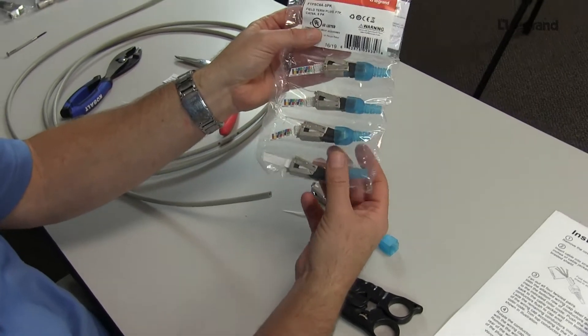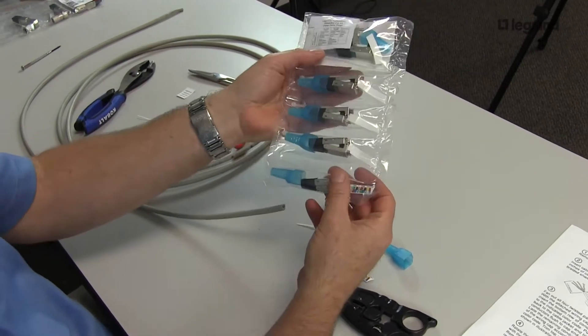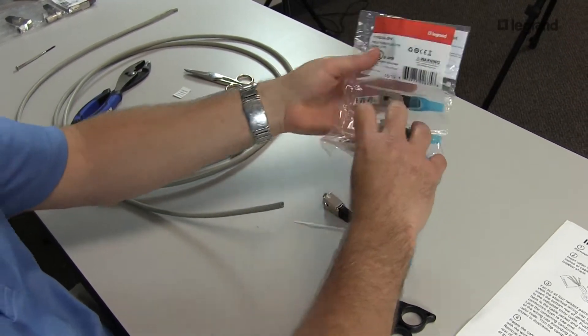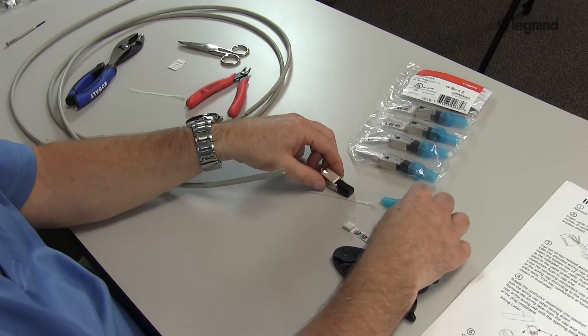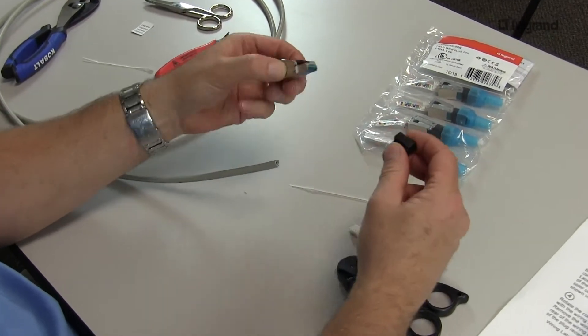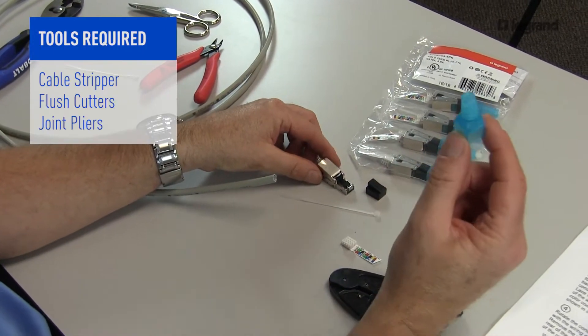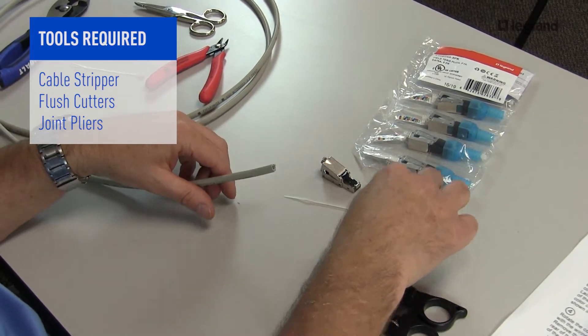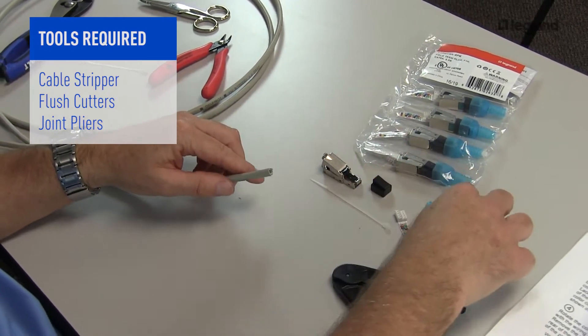Hey folks, you'll notice this field termination plug comes in a five pack. So you have a shielded field termination plug here. I've taken the liberty of removing one from the bag. You're going to have your shielded plug, your boot that you're going to put on first, your lacing cap, and of course a small zip tie.